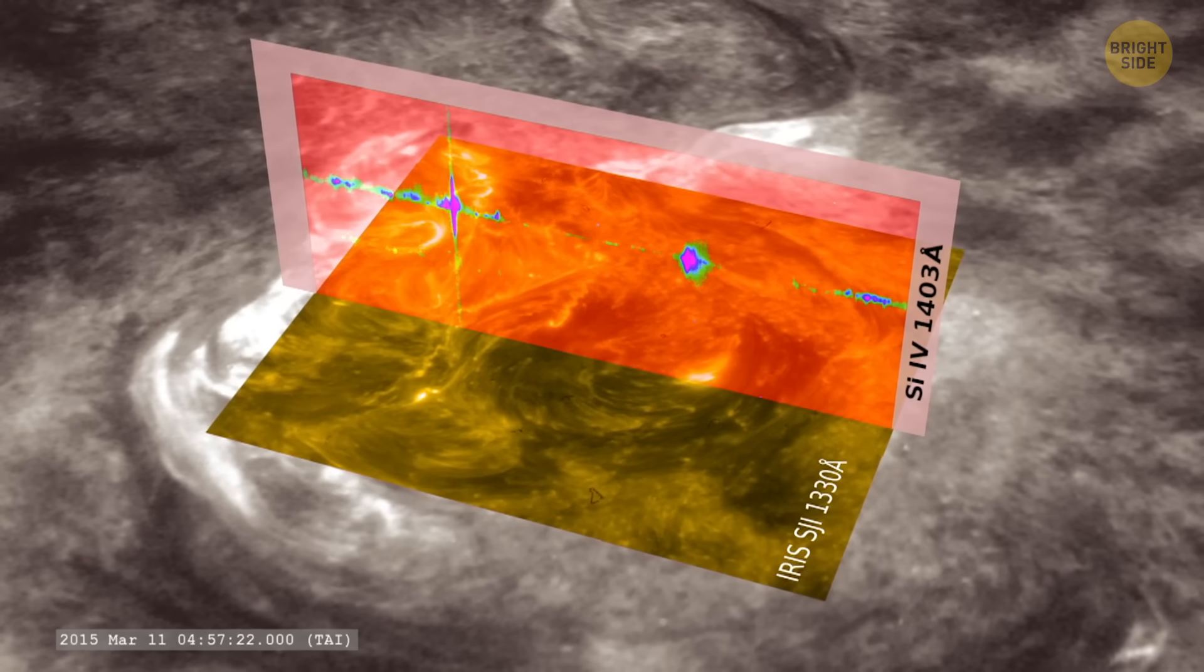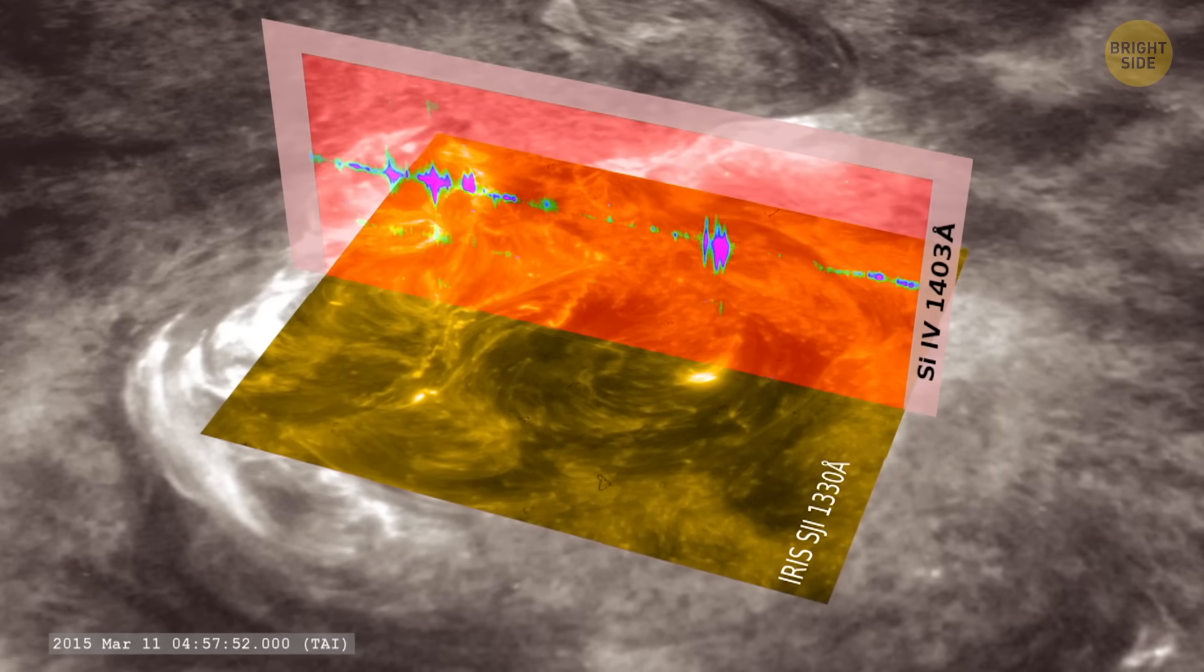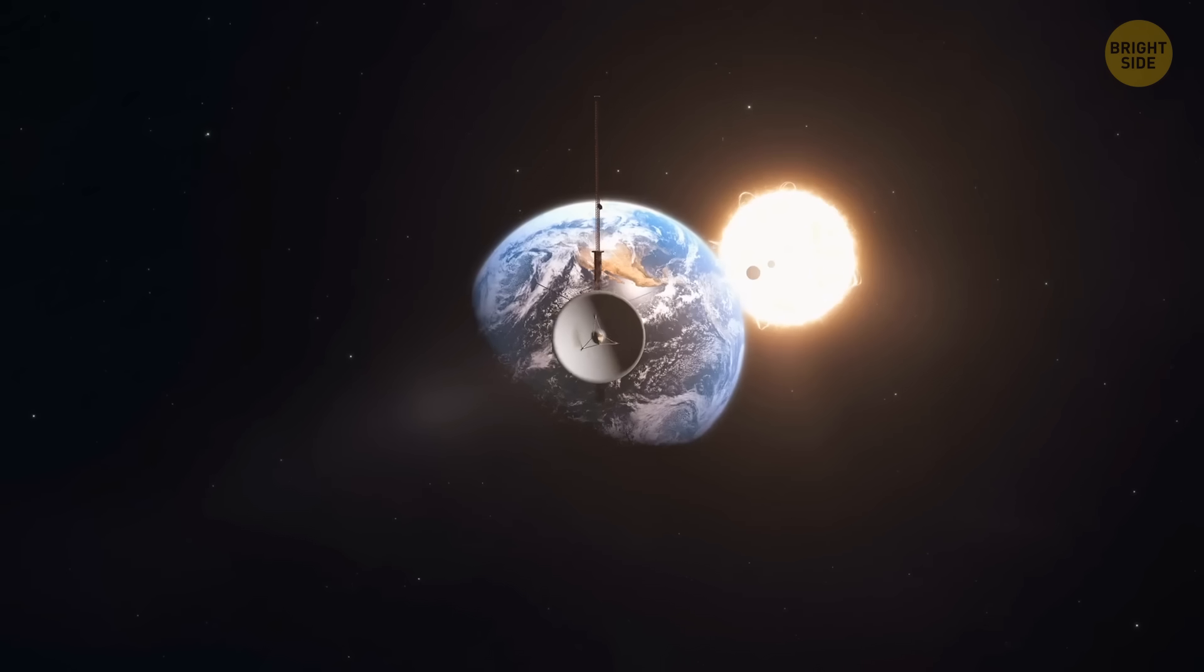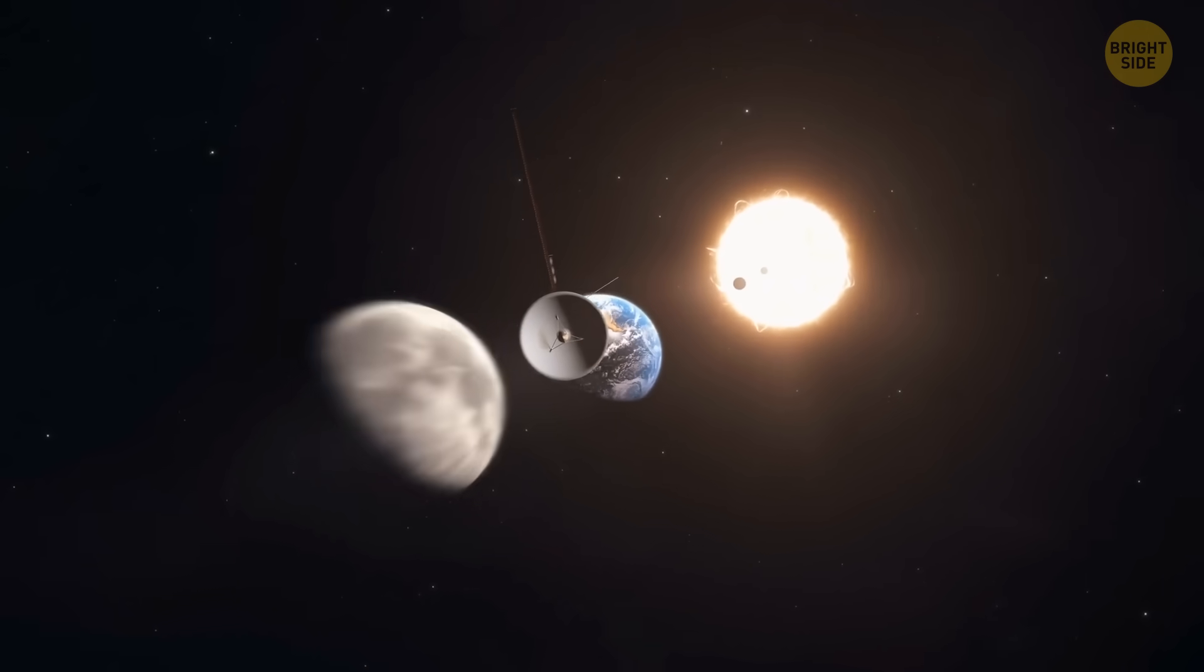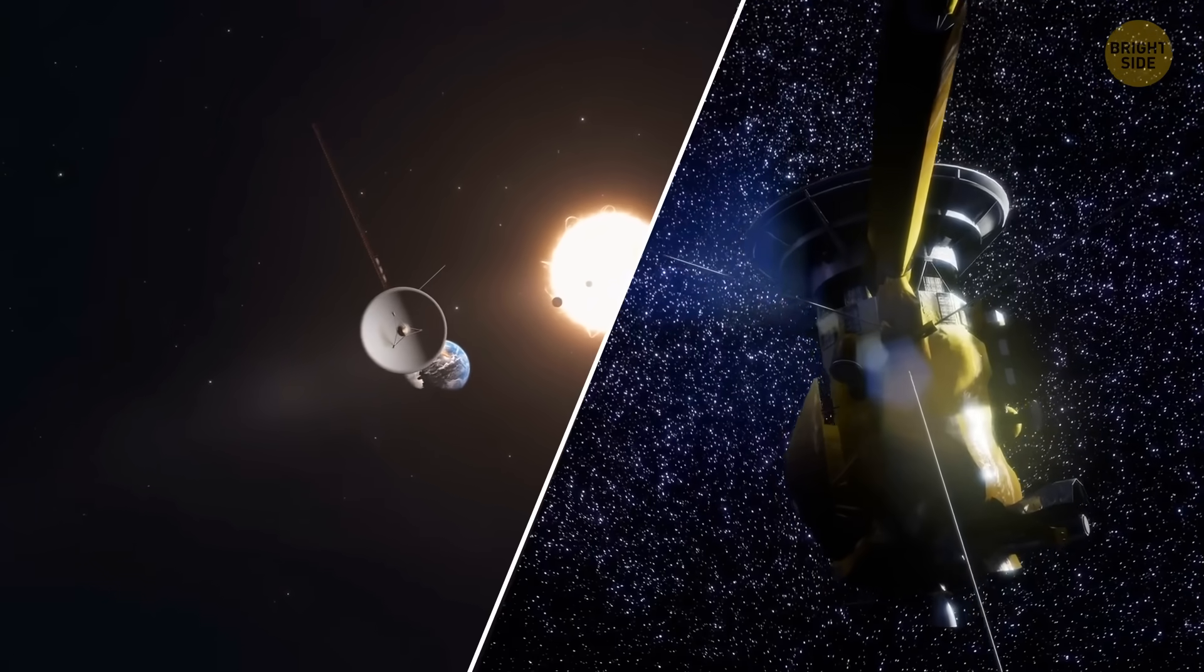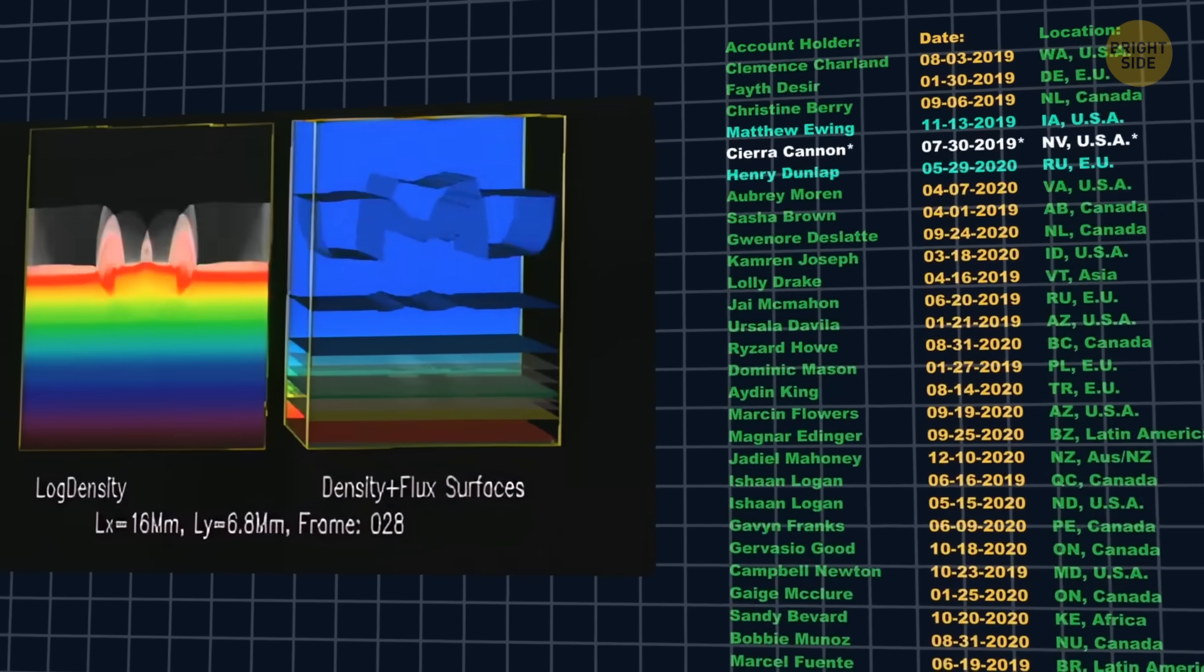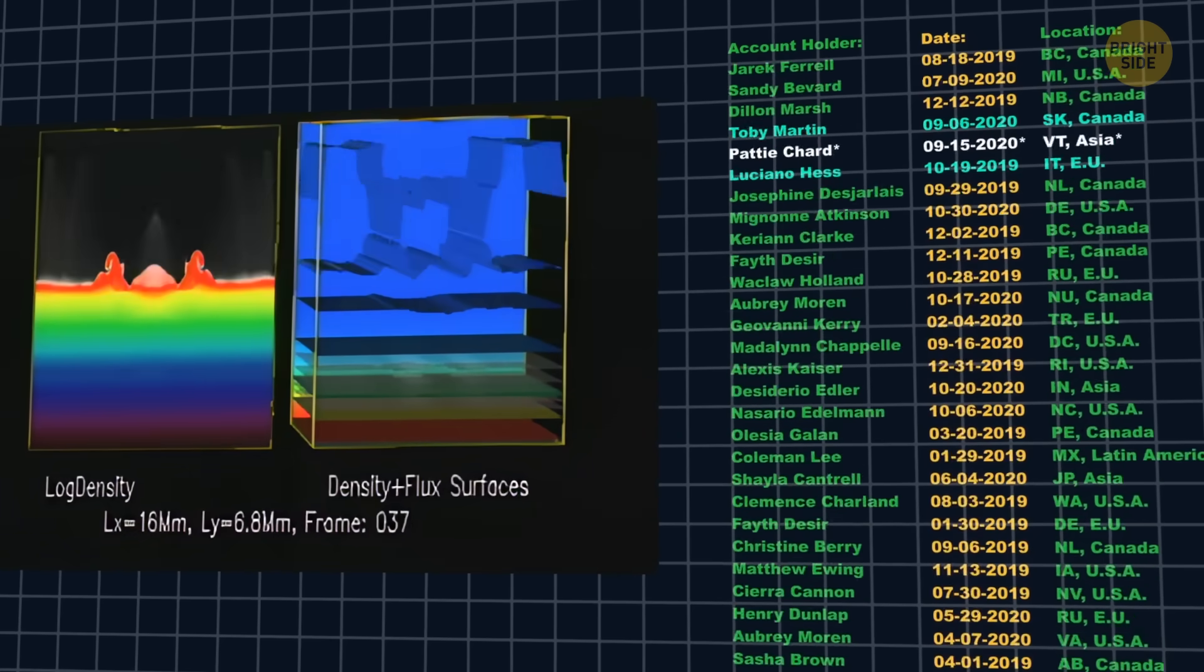Nearly 50 years after their launch, Voyagers 1 and 2 continued to send back data from beyond the heliopause. They are the only two spacecraft that have crossed this boundary so far. Together, they have already made several curious discoveries about space outside the solar system.